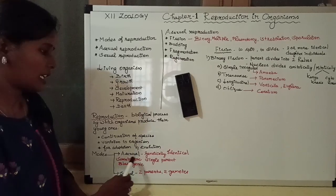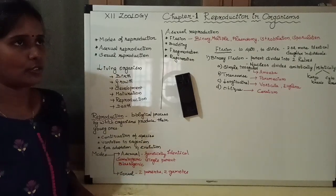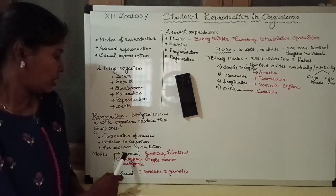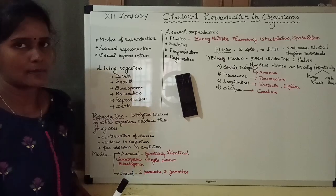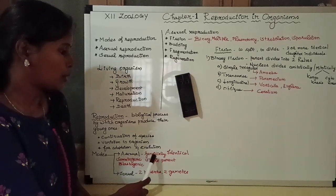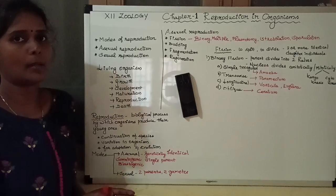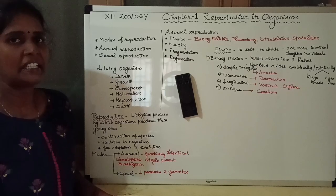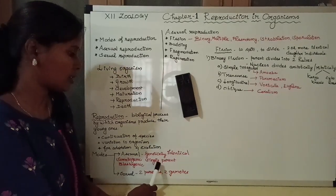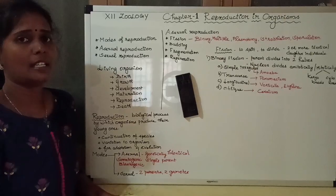All living organisms will reproduce. In asexual reproduction — 'asexual' meaning absence of sexes — there is no involvement of two parents. A single organism is involved. Such organisms are uniparental, meaning only one parent is involved. After producing young ones, they are genetically identical, sharing the same set of genetic material.